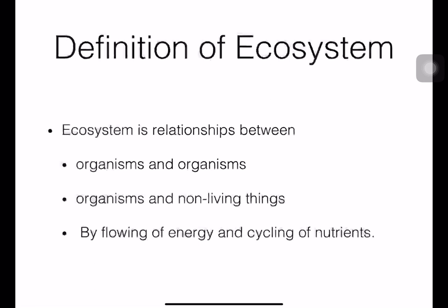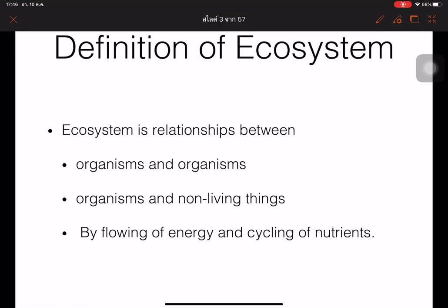The definition of ecosystem: the ecosystem shows the relationship between organisms — organisms related to other organisms, or even organisms related to non-living things such as air, water, soil, or other things.